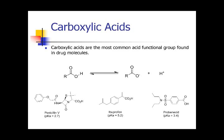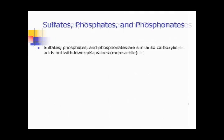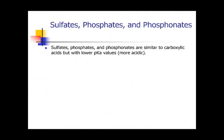The simplest of all acid functional groups for medicinal chemistry is the carboxylic acid. The more in-depth ones are the sulfates, phosphonates — they have similar behavior as a carboxylic acid. However, they tend to have a lower pKa value, hence they are more acidic.